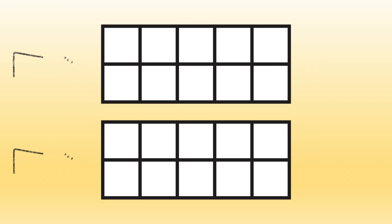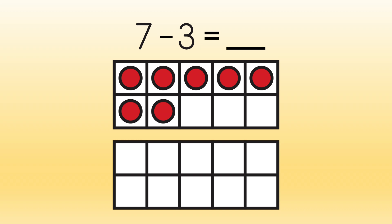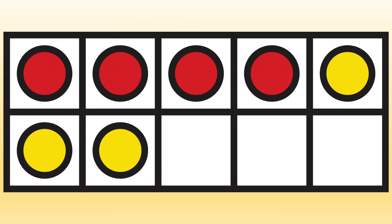Here is a subtraction sentence. 7 minus 3 equals blank. Let's start with 7 in our top frame to find the difference. We know we're taking away 3, so we count back and remove them. 1, 2, 3.